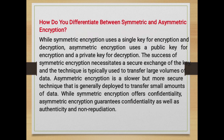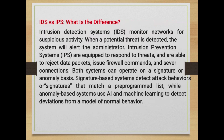How do you differentiate between symmetric and asymmetric encryption? Symmetric encryption uses a single key for encryption and decryption, while asymmetric encryption uses a public key for encryption and a private key for decryption. Symmetric encryption requires a secure exchange of the key and is typically used to transfer large volumes of data. Asymmetric encryption is a slower but more secure technique, generally deployed to transfer small amounts of data. While symmetric encryption offers confidentiality, asymmetric encryption guarantees confidentiality as well as authenticity and non-repudiation.